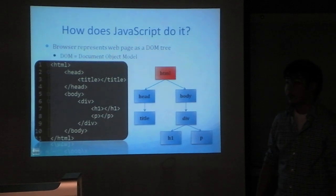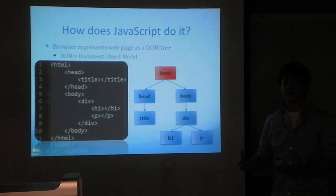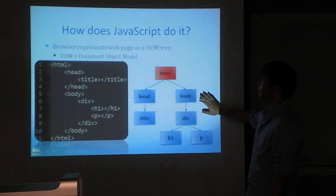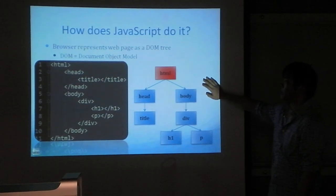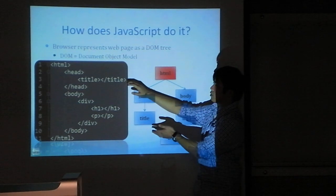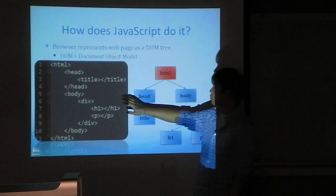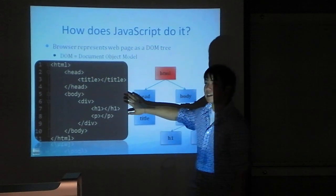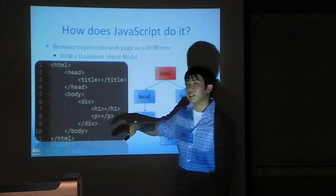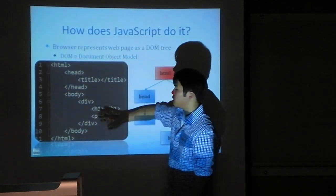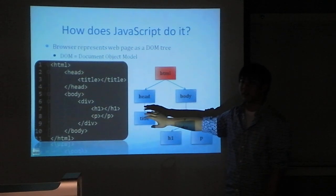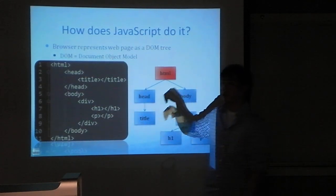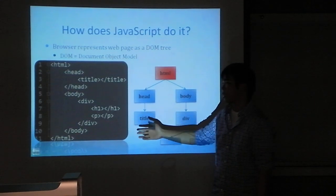Now we're going to look at how JavaScript actually works and how it's able to modify web pages that were previously static. We're introducing a new concept called the Document Object Model, or the DOM tree. What this talks about is how HTML is structured. When you take a look at a typical HTML document, what you get is a bunch of nested tags. It's always best to keep this nested structure apparent to yourself so you can tell exactly where things are embedded — who's the parent and who's the child of what element.